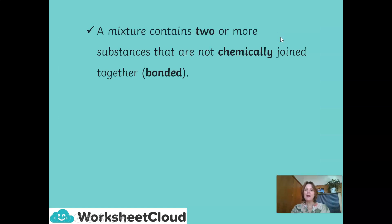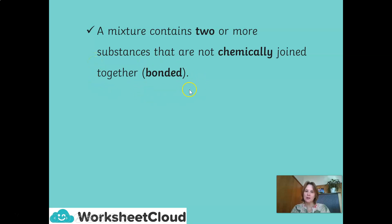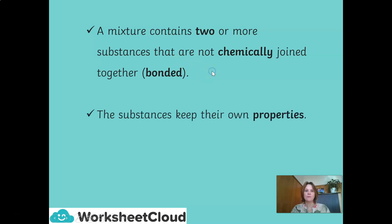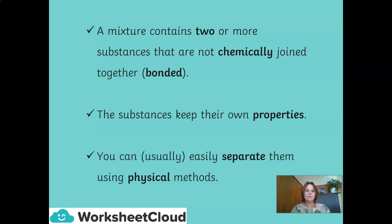To recap: a mixture contains two or more substances that are not chemically joined together — they're not bonded together to make a new substance. The substances keep their own properties, and you can usually separate them using physical methods.